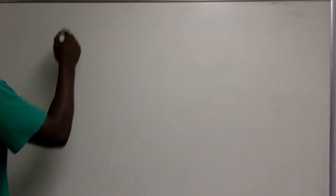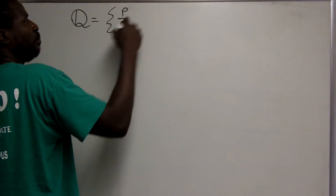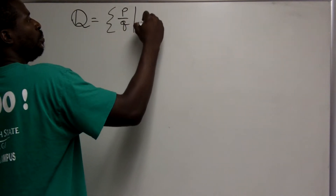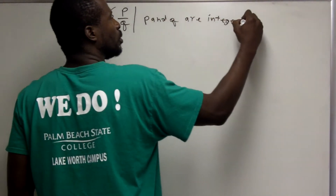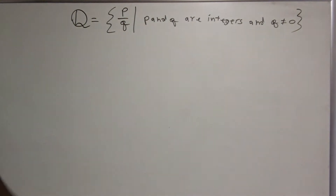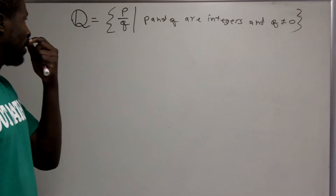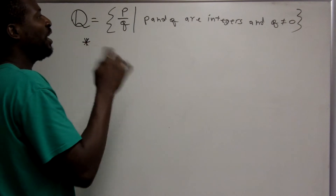Now we will talk about the set of rational numbers. We were talking about integers earlier. The set of rational numbers is the set of fractions P over Q, such that P and Q are integers, and Q does not equal zero. If you start dividing those integers, you get the set of numbers called the set of rational numbers. This set of rational numbers has a special characteristic: when you represent them as a decimal, they're always repeating or terminating decimals.